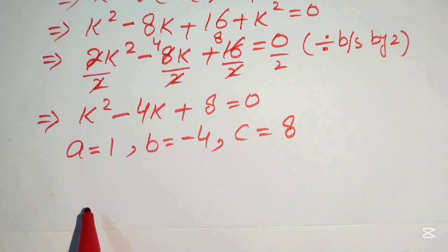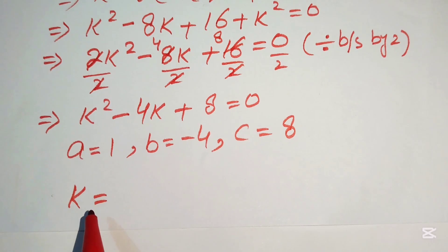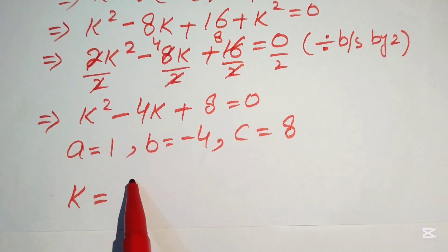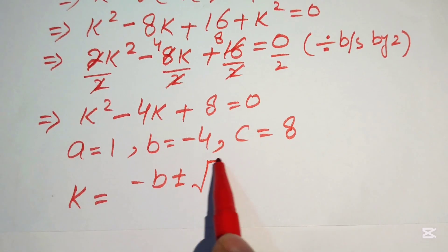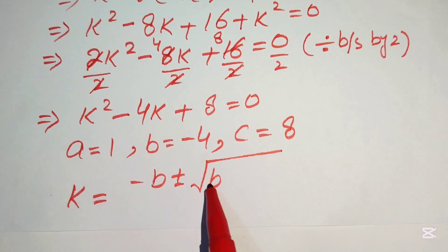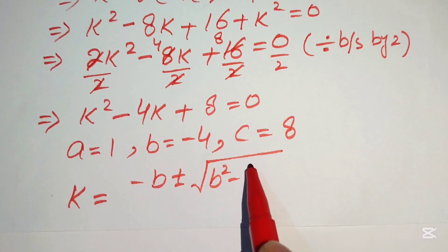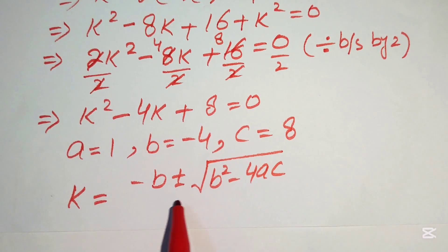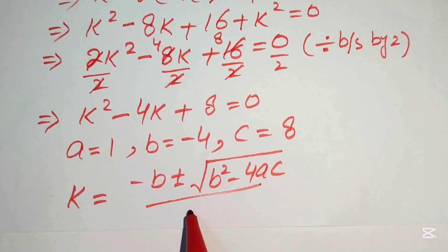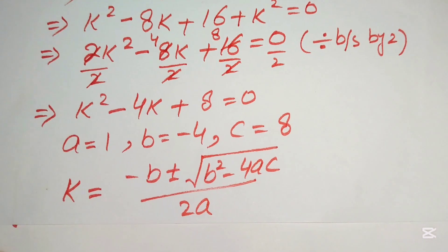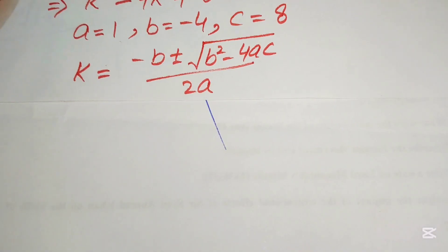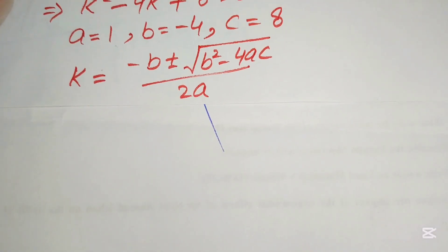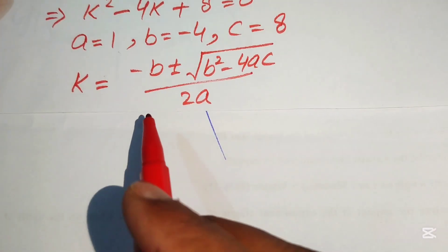The quadratic formula is k = [−b ± √(b² − 4ac)] / (2a). We substitute the values of a, b, and c.